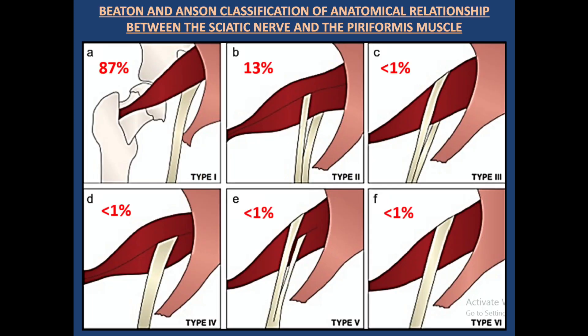This diagram shows the classification given by Beaton and Anson for the anatomical relationship between the sciatic nerve and the piriformis muscle. The highest incidence is 87%, where it comes into the thigh from the lower border of the piriformis muscle. In 13% of cases, one component comes below and the common peroneal comes from the center of the muscle. In Type 3, the tibial comes under and the common peroneal comes above the piriformis. In Type 4, the whole sciatic nerve comes from the center. In Type 5, the common peroneal comes above and the tibial nerve from the center. In Type 6, the whole sciatic nerve comes from above the piriformis. Anatomical variation is a non-discal cause of sciatica, because muscle contraction irritates the nerve.